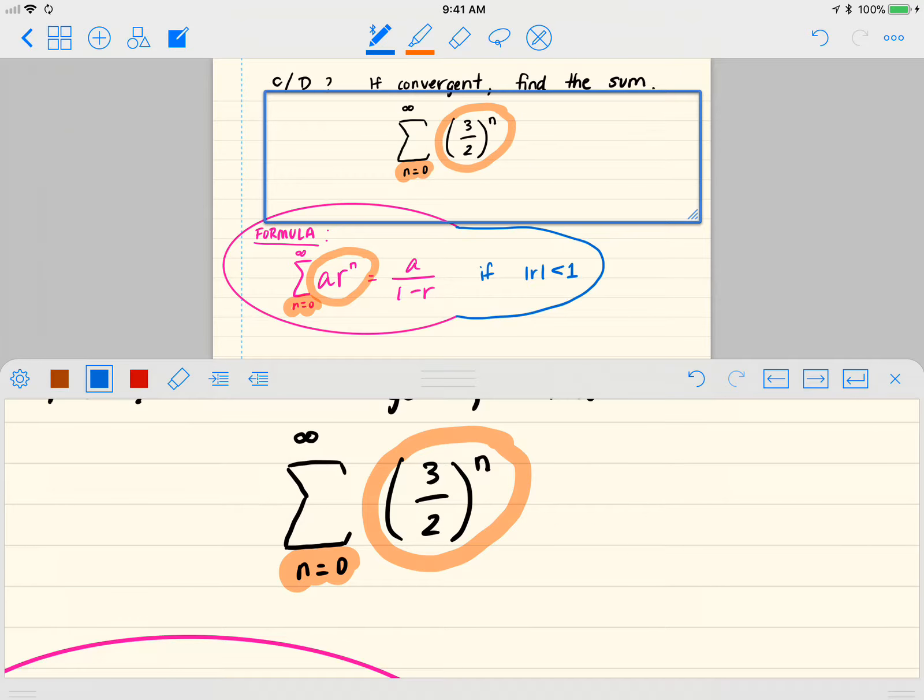So let a equal one, so we can rewrite this as the sum n equals zero to infinity of one, and then we've got three halves to the n. So we can see that one is a, which is our constant, and then r, the ratio, is three halves.